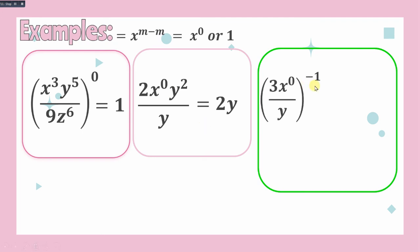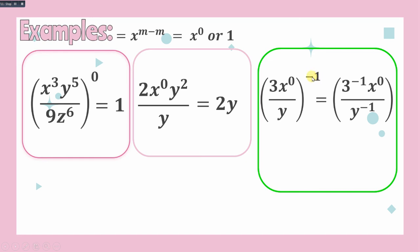Next example: if our given is 3x raised to 0 over y, all raised to negative 1, we distribute negative 1 to each term inside the parentheses. We get 3 raised to negative 1, x raised to 0 times negative 1, and y raised to negative 1 times negative 1. Since x raised to 0 equals 1, and simplifying the negative exponents by taking reciprocals, we end up with y over 3 as the final answer.